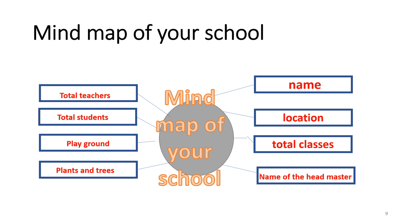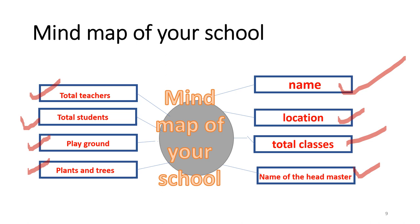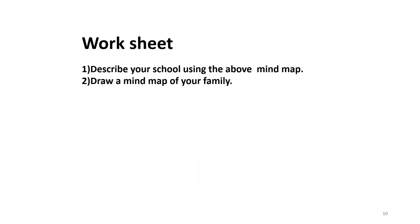This is the mind map of your school. Write the name of your school — name and location, where it is located, for example beside a police station or in the village. Total classes: how many classes are there? Who is your headmaster? How many teachers are working there? How many students are studying? Is there any playground? If yes, write something about it. Are there any plants and trees? If yes, write about them. Using this data, write a paragraph about your school. Describe your school using the above mind map. Draw a mind map of your family. Thank you.